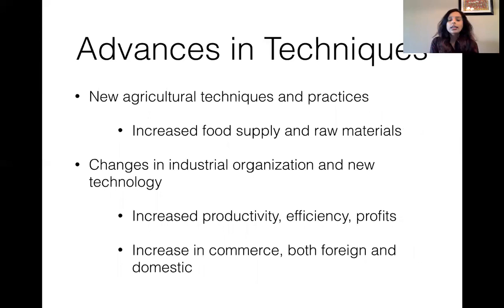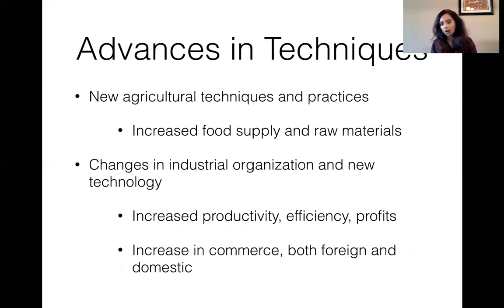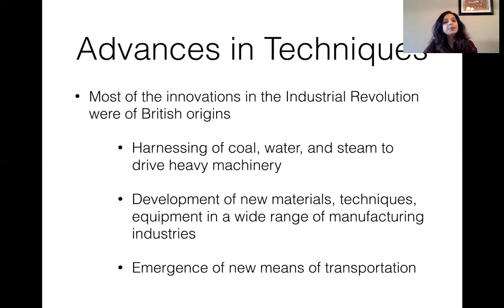There were a lot of advances in techniques during this time — new agricultural techniques and practices, increased raw materials, increased food supply. Productivity increased, commerce and the economy increased, and the market changed. There was a lot of trade and production. Things like coal, water, and steam emerged, and this was also the start of the first steam engine, along with new means of transportation. A lot of these innovations that happened in the Industrial Revolution happened in Great Britain.